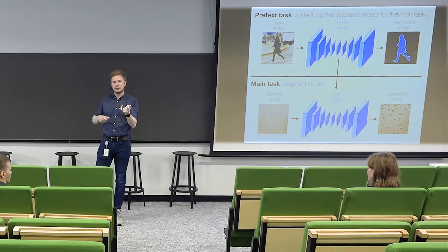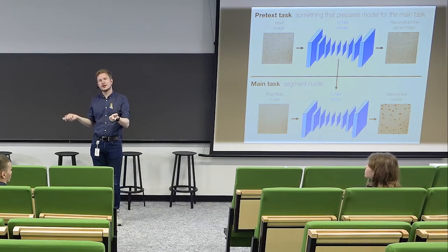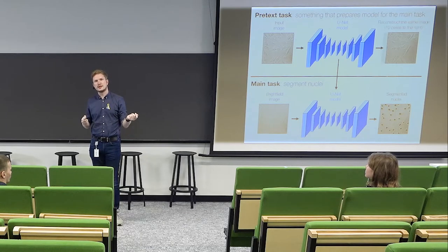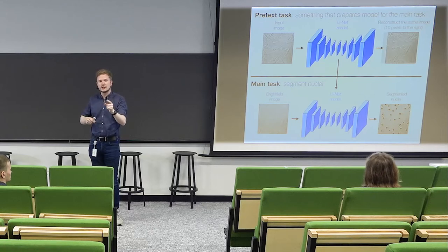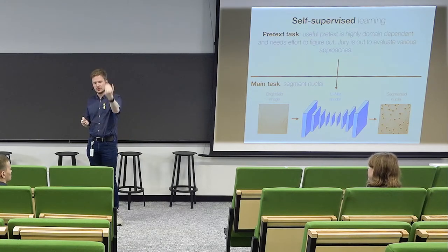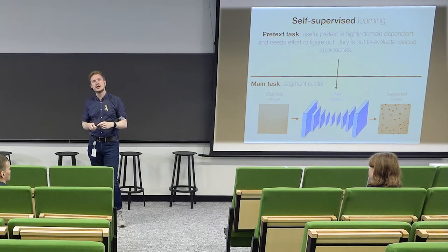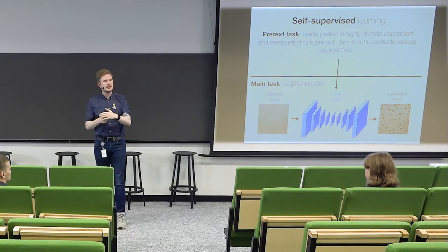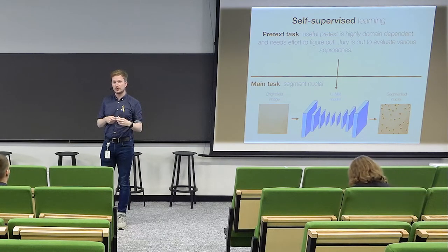People figured out that the pretext task matters — what you do matters. People have been doing things like reconstructing the same image from the input, or reconstructing a 10-pixel-shifted part of the image, to give the model a flavor of the problem it will deal with. This is called self-supervised learning or self-supervised pre-training. Finding the right pretext task is relatively complicated, and we are doing this research right now.